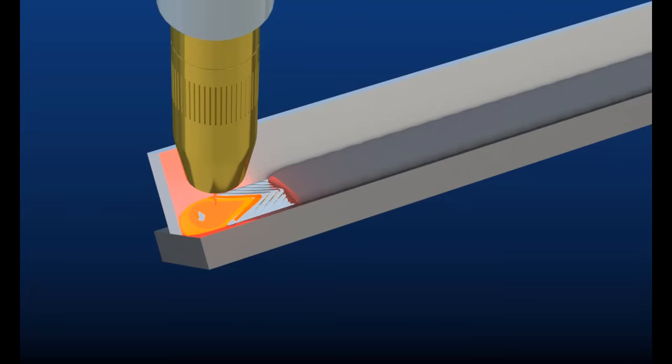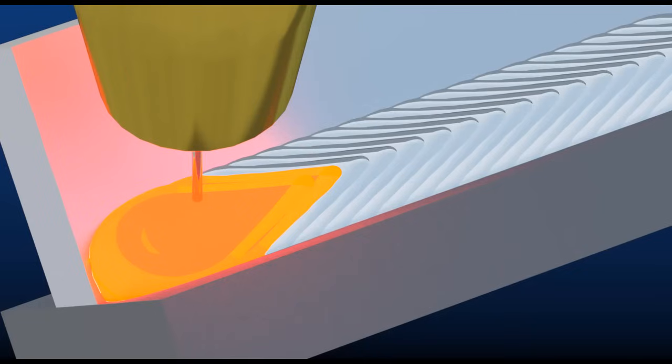In both the self-shielded and gas-shielded processes, the flux forms a thin layer of slag that protects the weld as it cools. This slag also helps the solidifying weld to take a consistent, low-profile shape.